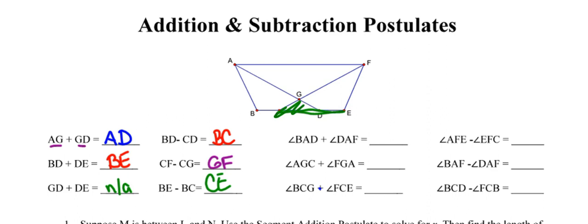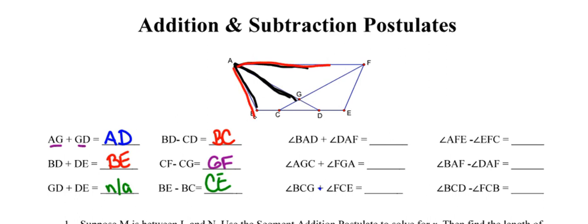Not only can we do this for line segments, but we can also do it for angles. In order to do it for angles, the angles would have to have a shared side. In this first one, we take angle BAD and add to that angle DAF. If we put those two together, we end up with angle FAB, or equivalently angle BAF — they're the same angle.